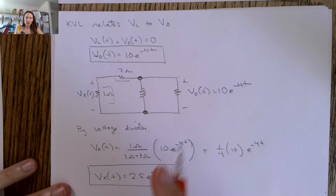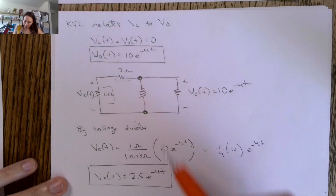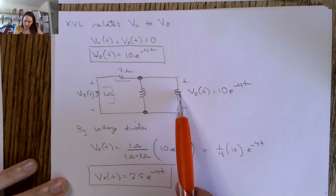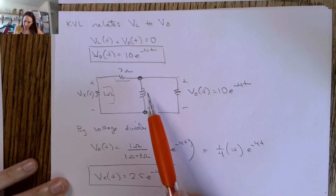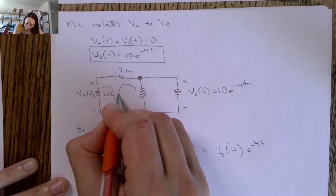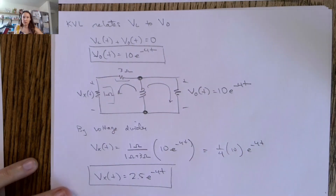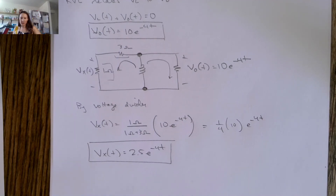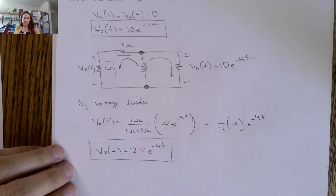So we have our two voltages that we were asked for — both decaying exponential voltages provided by this inductor discharging through these resistors. That's an example of a problem where we're asked to evaluate the natural response of an RL circuit. Let me know if you have questions. Thank you.